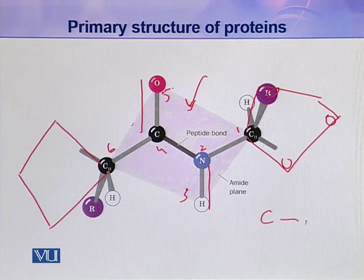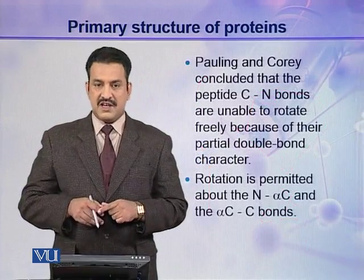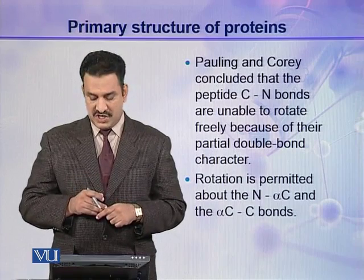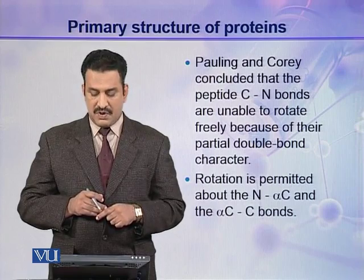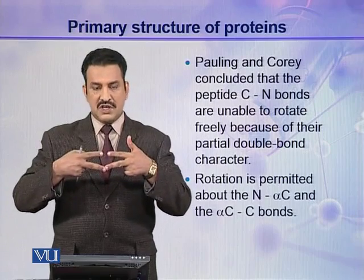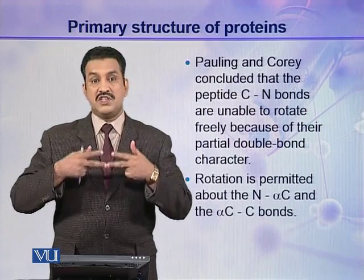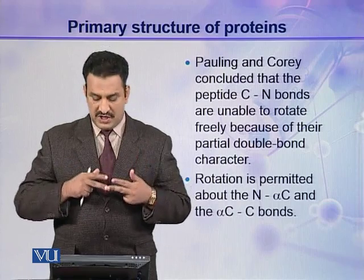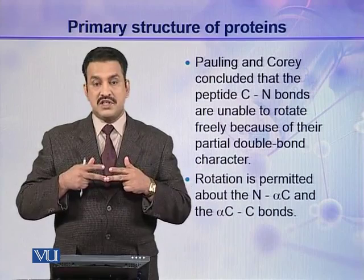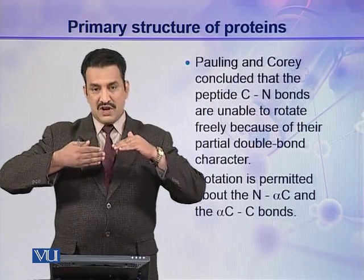The C=O and N-H can never be in a cis configuration — this is not present in protein molecules. Pauling and Corey concluded that the peptide C-N bonds are unable to rotate freely because of their partial double bond character. Single bonds can rotate, but double bonds cannot. Since the peptide bond is partially a double bond, it is a rigid bond and cannot rotate. But if it cannot rotate, how do different peptide groups become angular to each other?